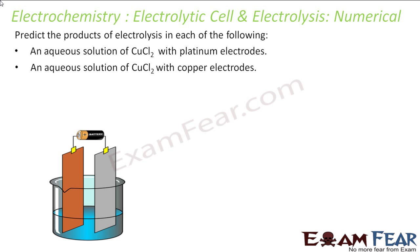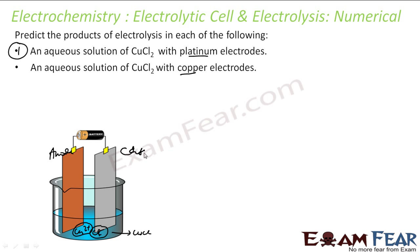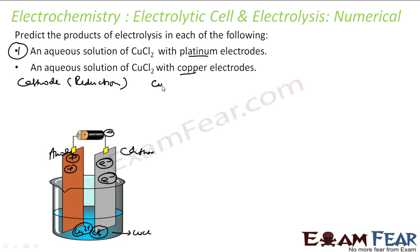We have to predict the product of electrolysis in each case. The first is aqueous CuCl₂ with a platinum electrode. CuCl₂ gives Cu²⁺ ions and Cl⁻ ions. This is my anode, this is my cathode. For cathode, where reduction happens, what are the possible candidates? Cu²⁺ ions from solution can get reduced, or water itself can get reduced.